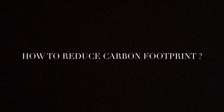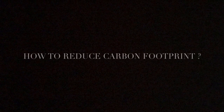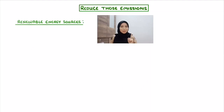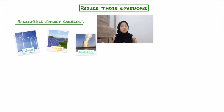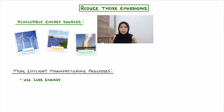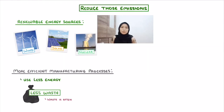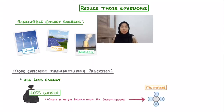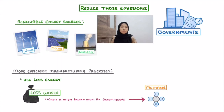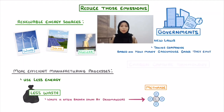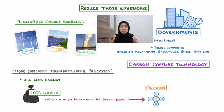How to reduce carbon footprints? We can make sensible plans to try and reduce those emissions. One way is to use renewable energy sources like wind, solar, or nuclear energy instead of fossil fuels. Another option would be to use more efficient manufacturing processes that require less energy and produce less waste. Reducing waste is actually really important because waste is often broken down by decomposers which can release methane. Governments can also help, for example, by introducing new laws or taxing companies based on how many greenhouse gases they emit. There is also carbon capture technology available to capture the carbon dioxide formed when we burn fossil fuels.